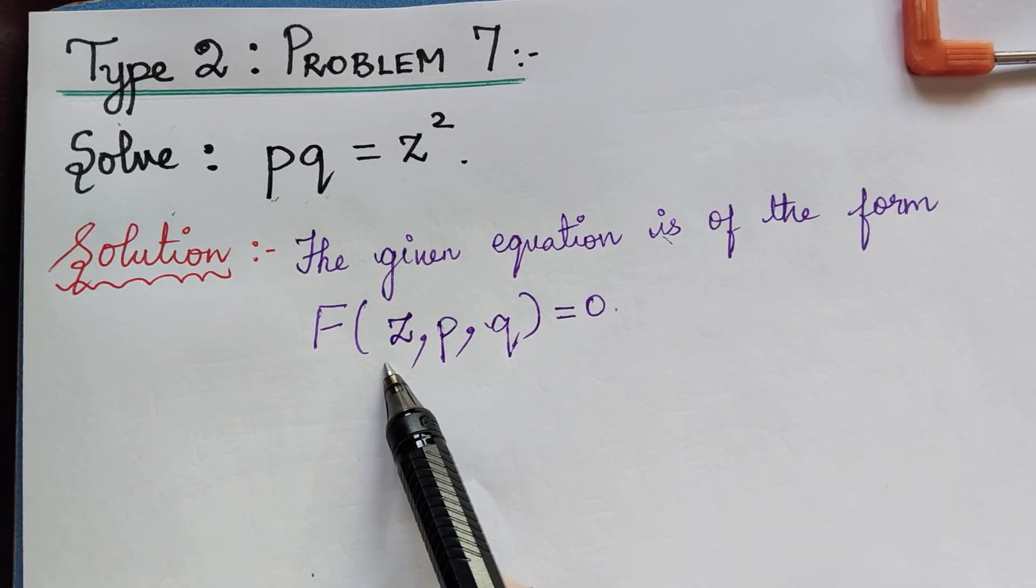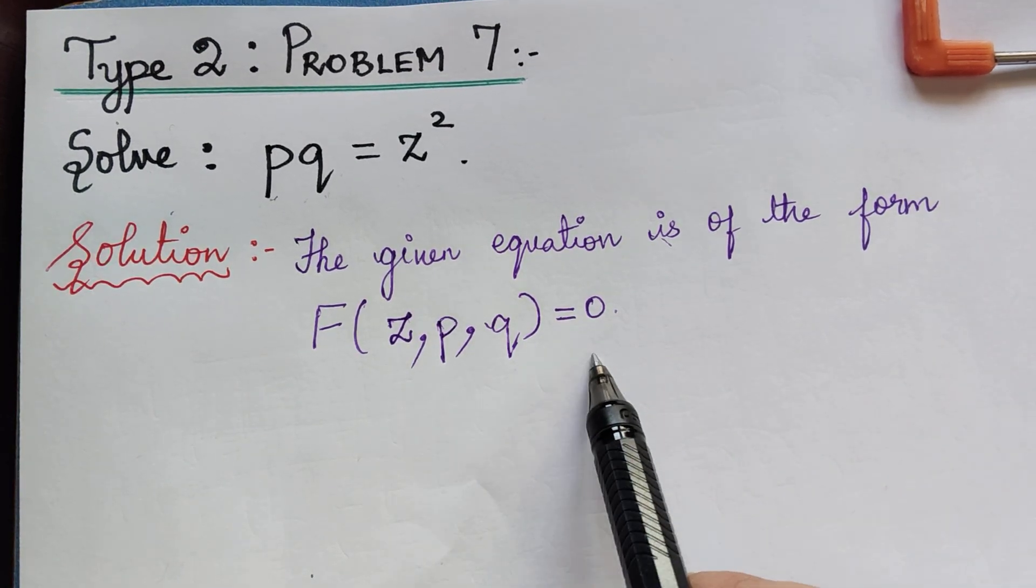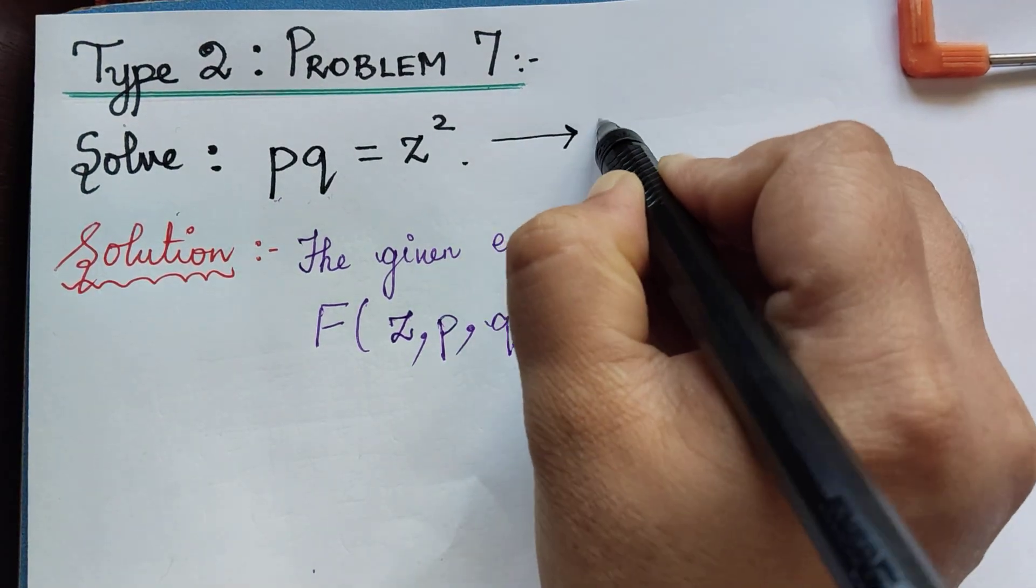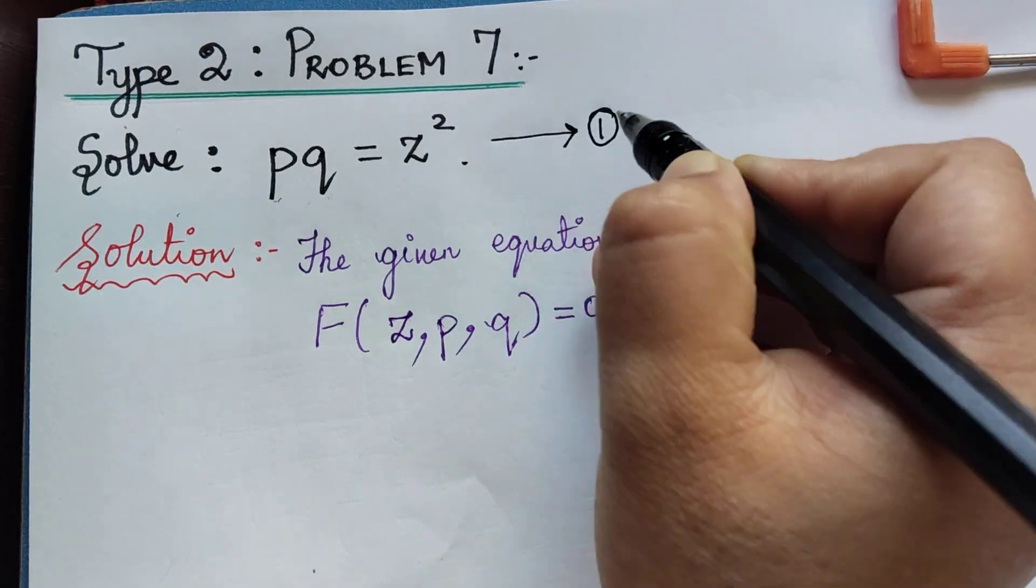F(Z, P, Q) = 0. The first step is to mark the given equation as equation 1, and then put Q = AP in equation 1.